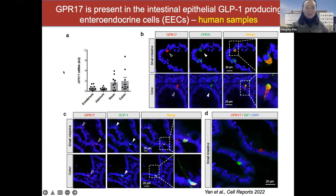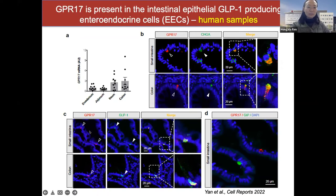Moving to a different chapter: gut GPR17 data, published earlier this year. While working in the brain, we found that GPR17 was also expressed in intestinal tissues. Characterizing human samples, GPR17 staining in red and the endocrine marker chromogranin A in green shows good overlapping. We also stained GPR17 with other gut hormones — GLP-1 on the left and GIP on the right. Curiously, GPR17 expression has good overlap with GLP-1 but not so much with GIP.